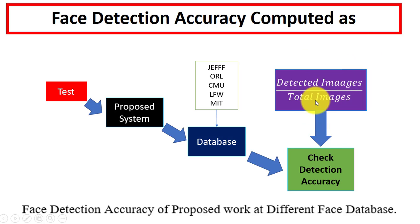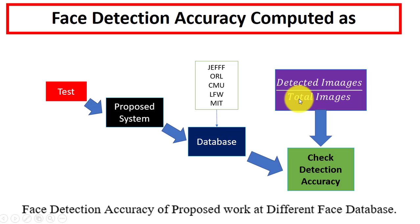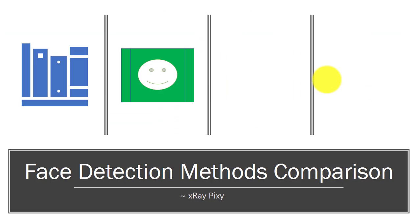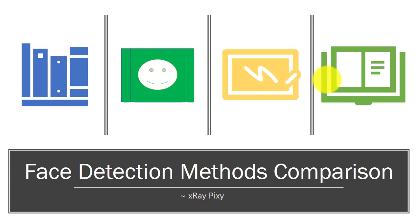You can test your proposed model on these different databases. After that, you check the number of detected images divided by the total images present in the database — that is the simple process for calculating accuracy. That's just a simple introduction about face detection methods and how we can calculate face detection accuracy for any proposed model.